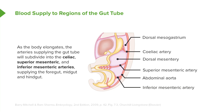The blood supply to the gut is going to fall into three major vessels supplying three major regions. The celiac artery, or celiac trunk, supplies the foregut — the stomach, the proximal duodenum, the liver, the gallbladder, and the majority of the pancreas. Thereafter we have the superior mesenteric artery supplying the midgut: the distal duodenum, a part of the head of the pancreas, the jejunum, the ileum, the cecum, appendix, ascending colon, and transverse colon. Then we come to the last segment, the hindgut. The hindgut organs get their blood from the inferior mesenteric artery, and they are the descending colon, sigmoid colon, and rectum.